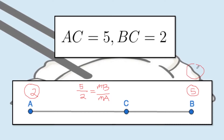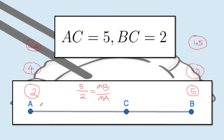Any combination of masses that have the ratio 5 to 2 is going to work. So instead of 5 and 2, I can use 10 and 4, or even 1.5 and 0.6. There are a lot of masses you can assign — just make sure the ratio is preserved. Since AC over CB is 5 to 2, the mass on B to the mass on A should also be in the ratio 5 to 2.